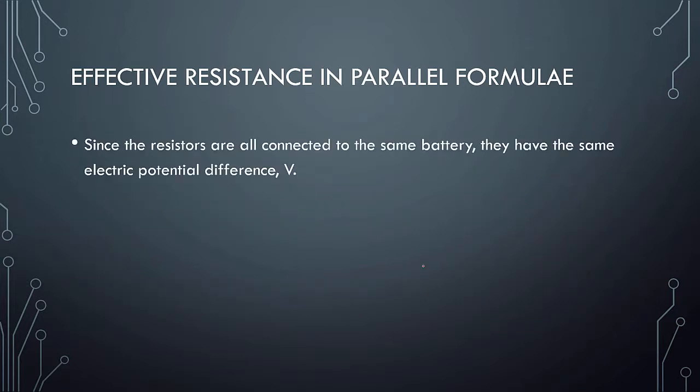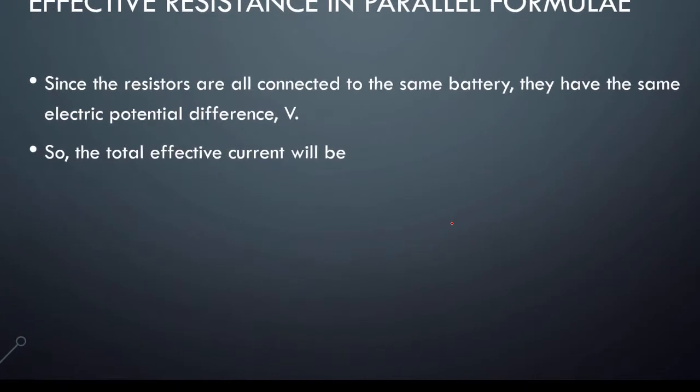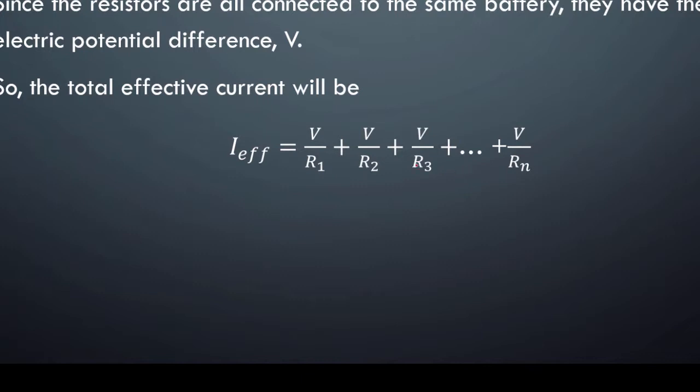Since the resistors are all connected to the same battery, they all have the same electric potential V. So the total effective current will be V over R1, which is the first branch of current, V over R2 is the second branch, V over R3 is the third branch. If you have more resistances, you can add on until Rn, where n is the nth resistor connected in parallel.